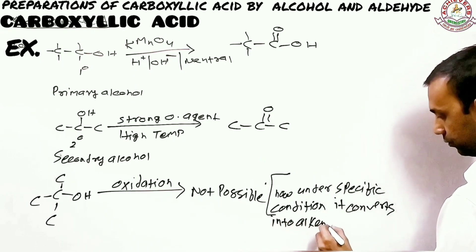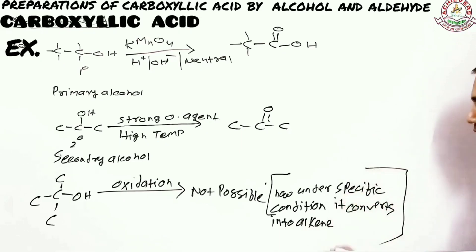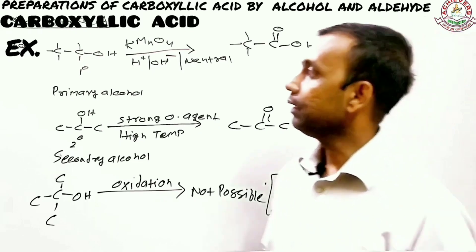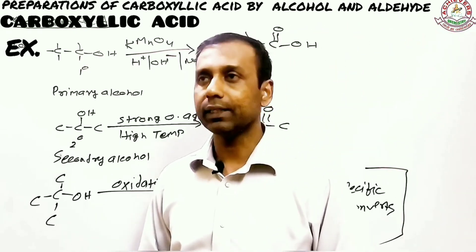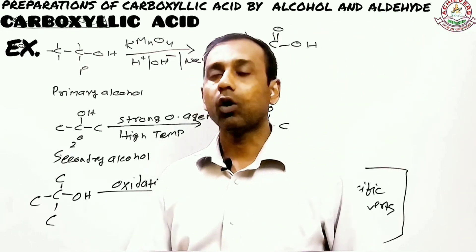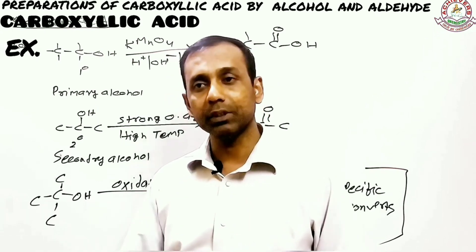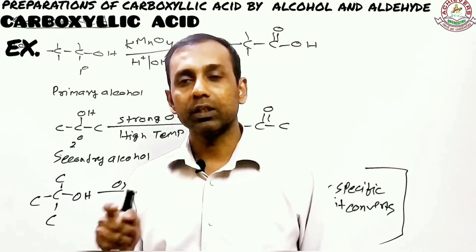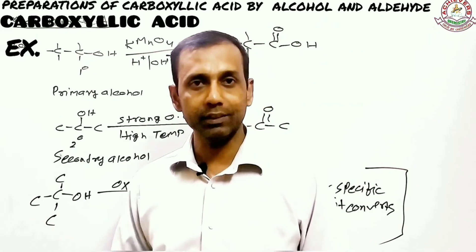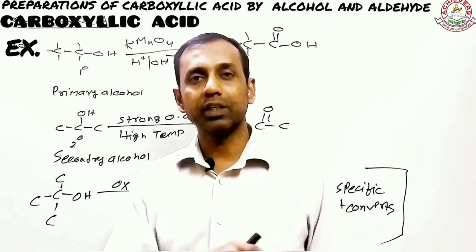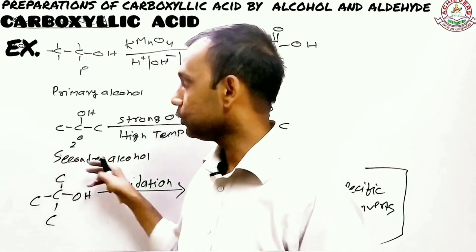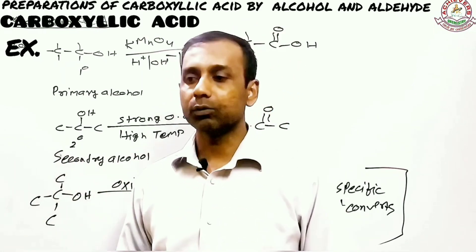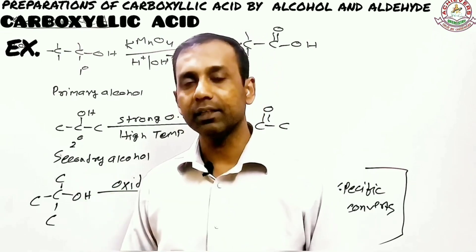So the viable options for making carboxylic acid are primary alcohol and aldehyde. Also, phenol cannot be directly converted into carboxylic acid the same way because it goes through a different pathway to form benzoic acid — I'll cover that in a later section.